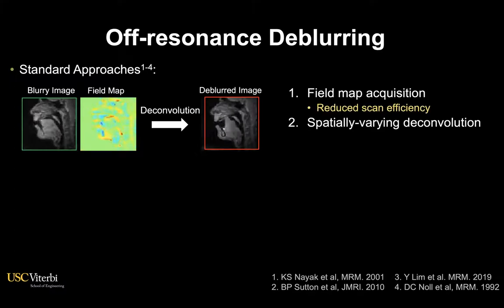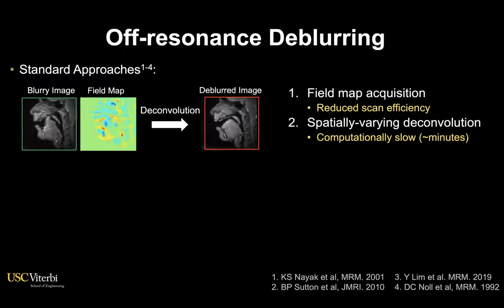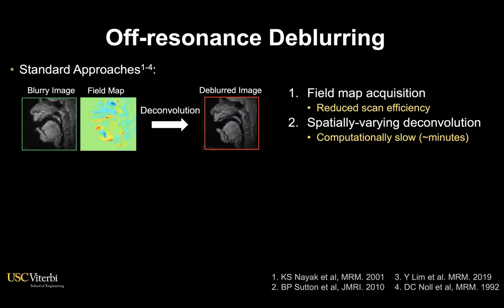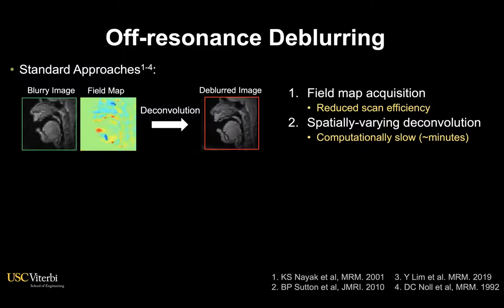Given the blurry image and the field map, the deconvolution procedure is usually performed, but is typically computationally slow. These two types of limitations are not desirable for real-time MRI applications, whereas high scan efficiency and low latency processing are crucial.